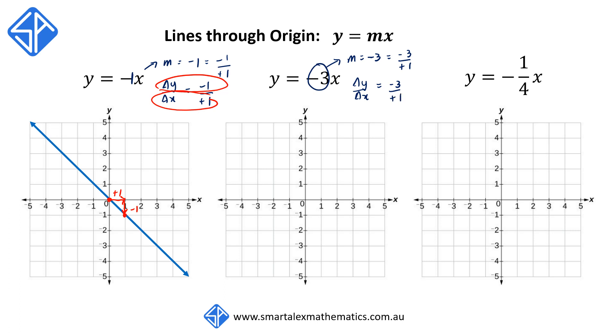Starting off at the origin, (0, 0). Δx, our run, is plus 1 — so we're going to move across to the right by 1 unit.